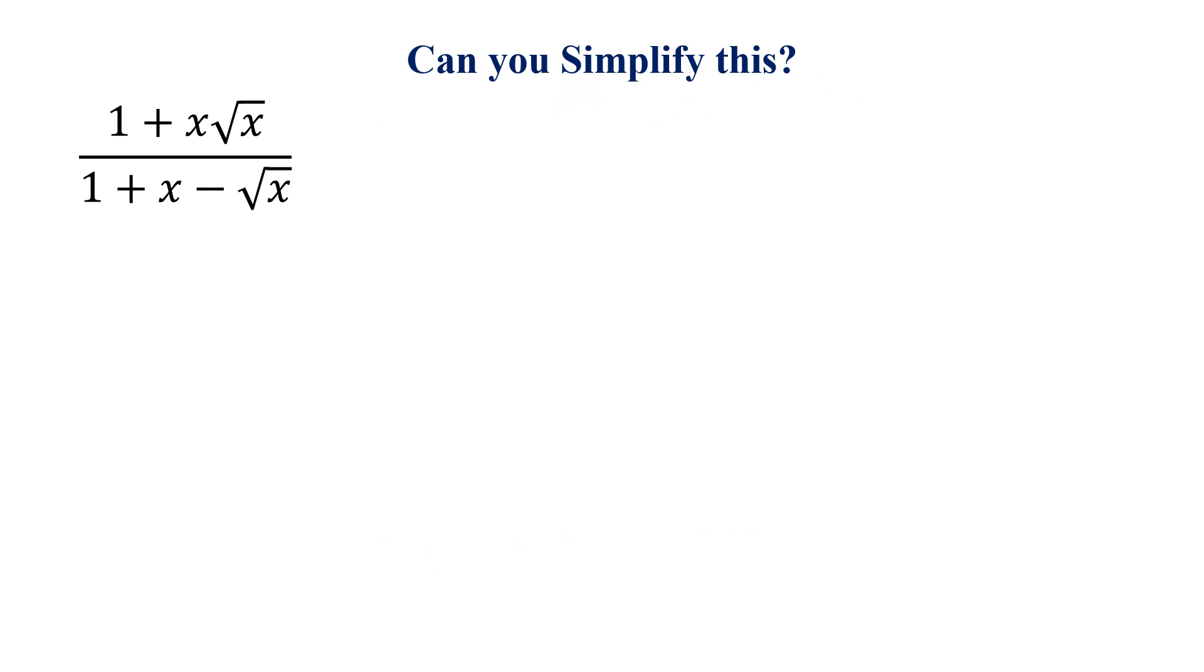Let's begin to solve the question. The question is, can you simplify this: 1 plus x times square root of x, divided by 1 plus x minus square root of x. How can we solve this?